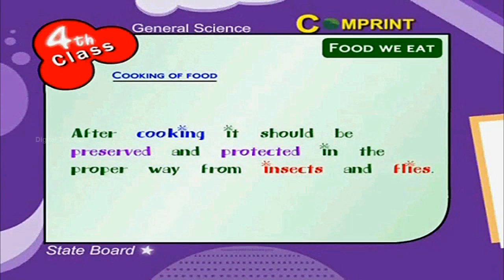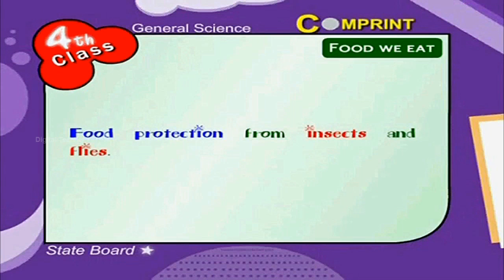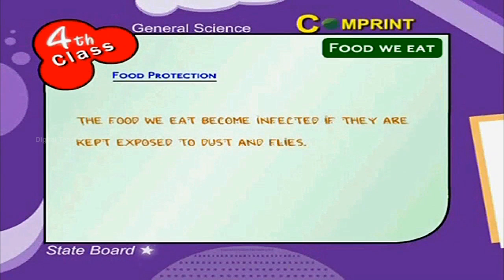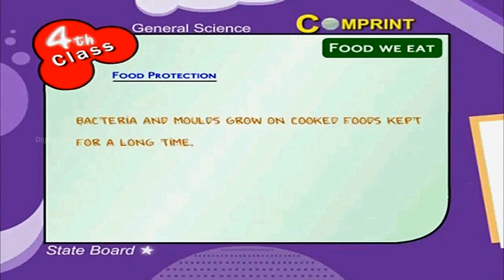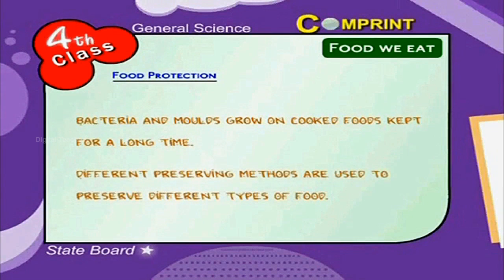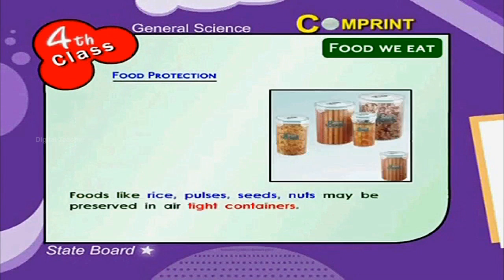Food must be protected from insects and flies. The foods we eat become infected if they are kept exposed to dust and flies. Diseases like cholera, typhoid, and diarrhea will spread by eating contaminated food. Bacteria and molds grow on cooked food kept for a long time, so different preserving methods are used to preserve different types of food.